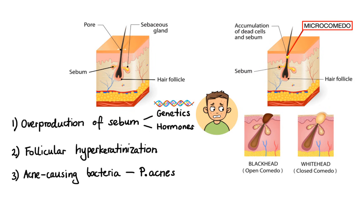Now let's move on to the second major cause of acne, that is follicular hyperkeratinization. Hyperkeratinization occurs when the cells of the follicle become cohesive and do not shed normally onto the skin's surface. As a result, dead cells tend to clump together, blocking pores and causing a backup of sebum in the follicle.